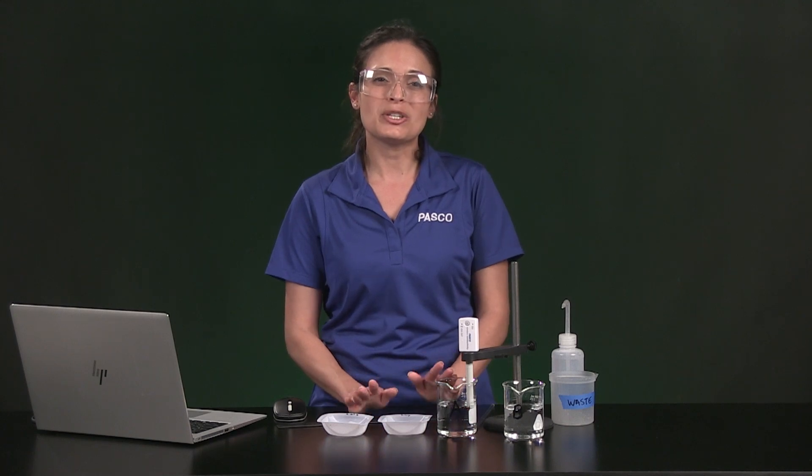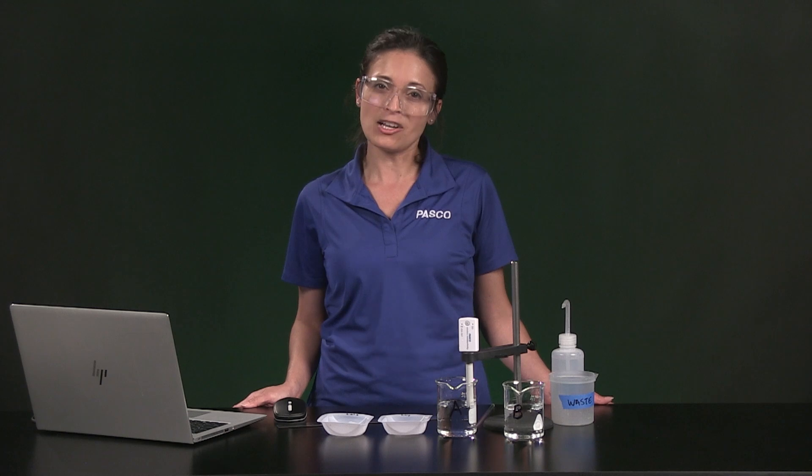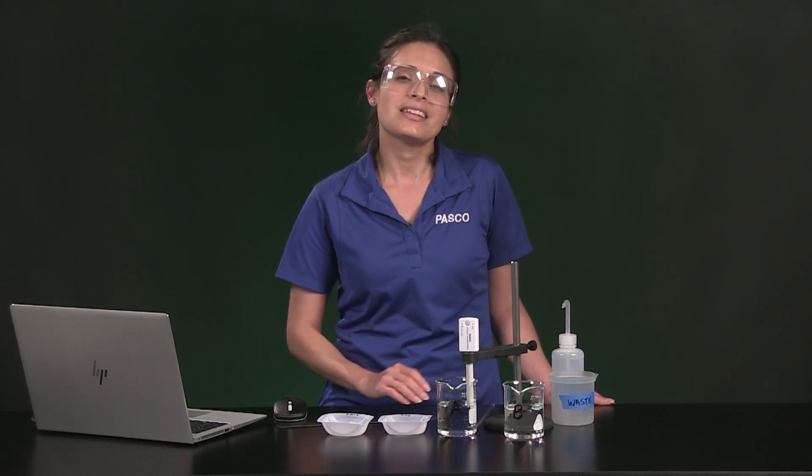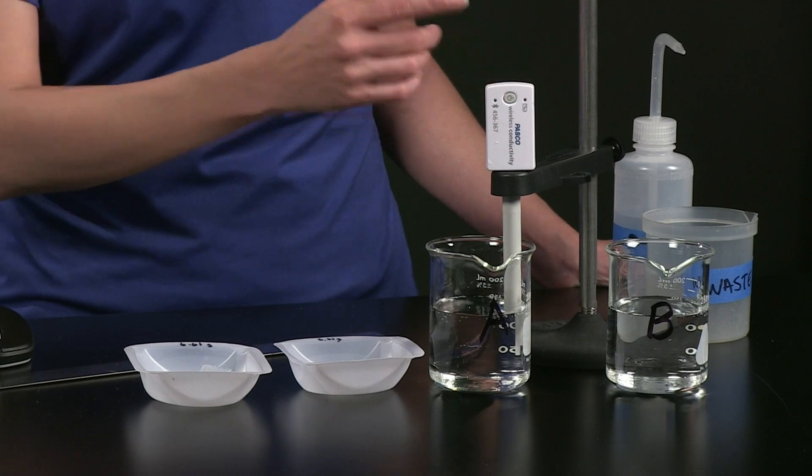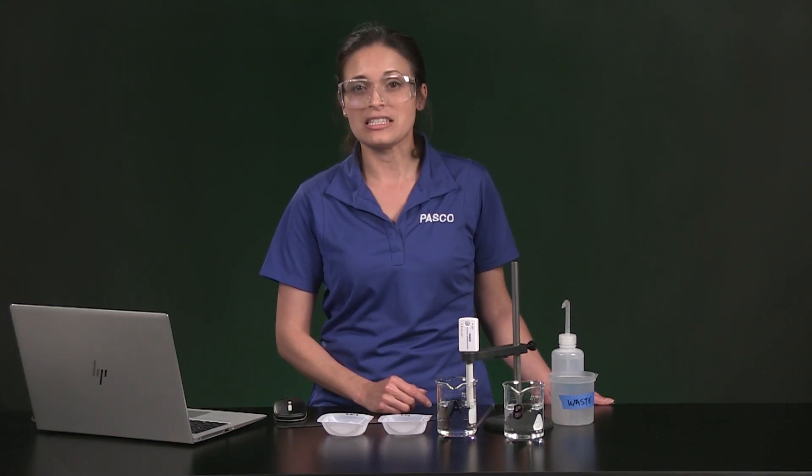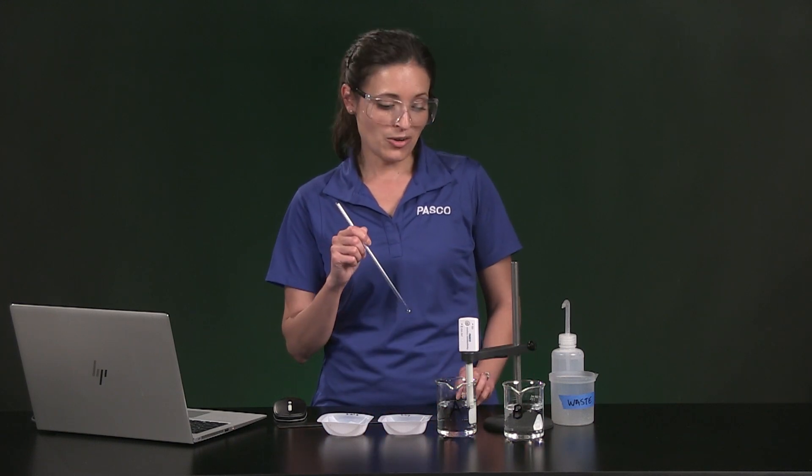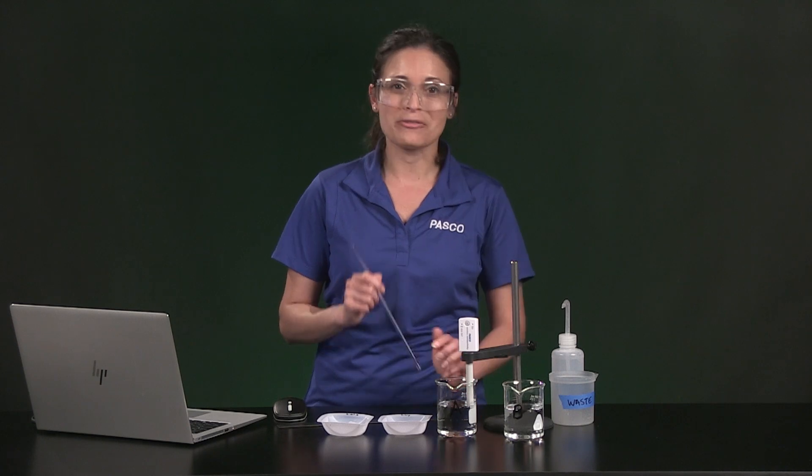Now we are ready to put these cubes in 150 milliliters of distilled water to see how fast the salt will dissolve out of each cube sample into the water. This conductivity sensor will detect those sodium and chloride ions that appear when salt dissolves into the water. I am going to stir by hand with a stirring rod, trying not to hit the cube or the sensor for 5 minutes.